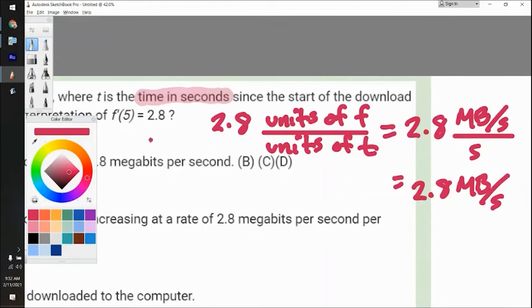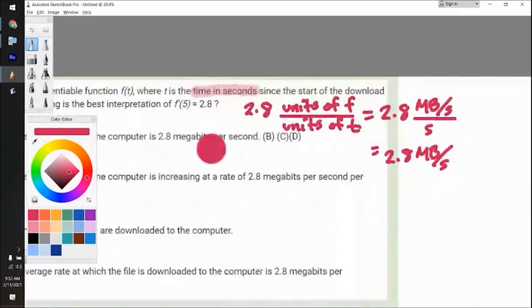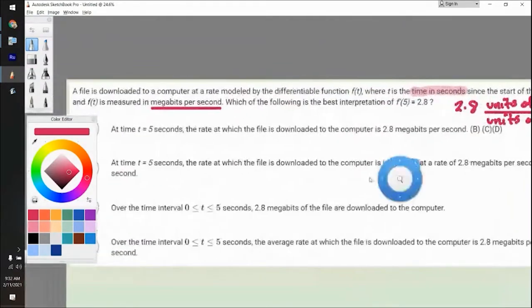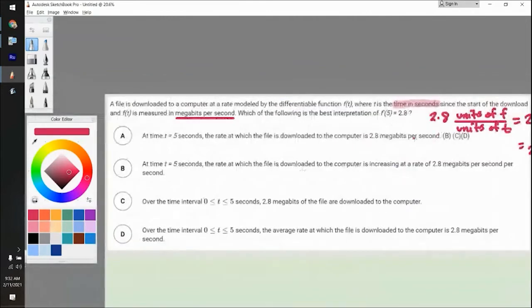So right away, we have our context for what that f prime of five means. But we don't have it in context for whatever the five is. So you have to take that into account when we actually solve this problem. But the main thing we are looking for is anything that has a 2.8 megabits per second per second, or per second squared. If you notice, the first one says megabits per second. That's not the answer.